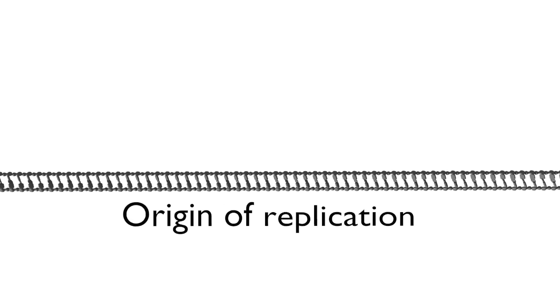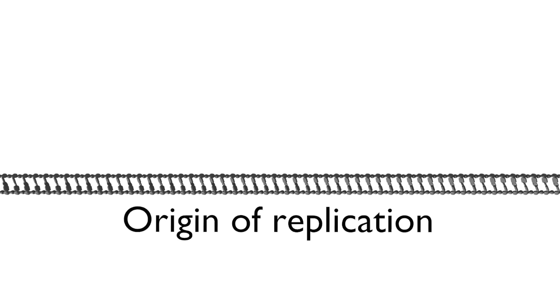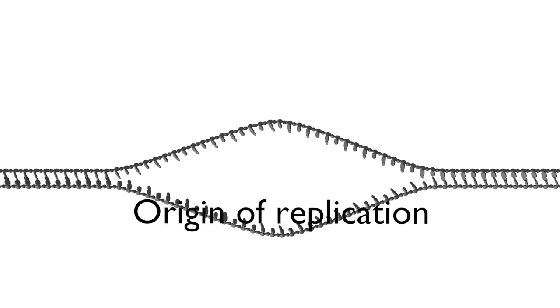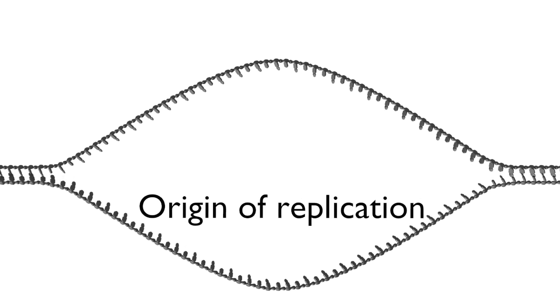For copying to take place, the double helical structure of the DNA must first be opened at a site termed the origin of replication to allow access by the machinery that will copy the DNA. This opening is regulated by a series of initiation regulatory proteins not shown here.